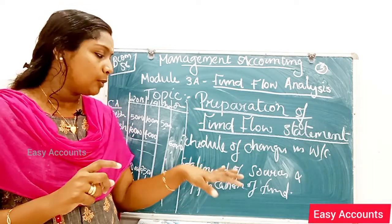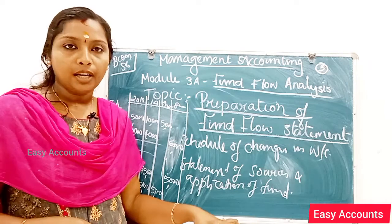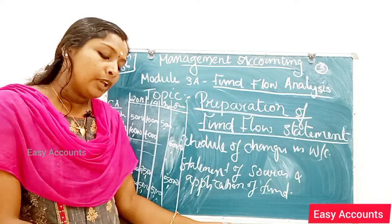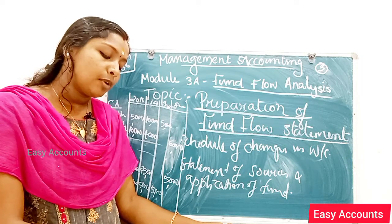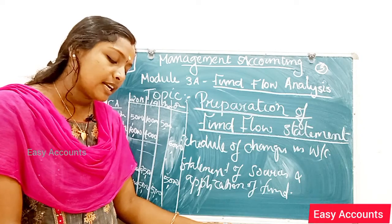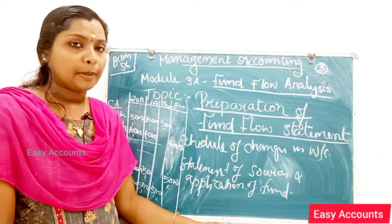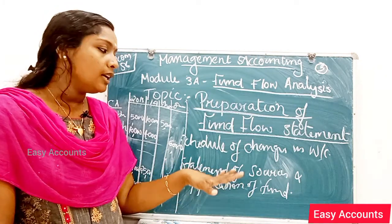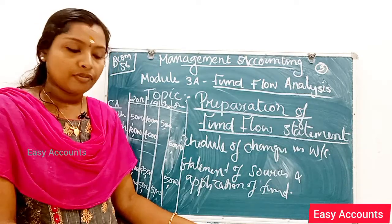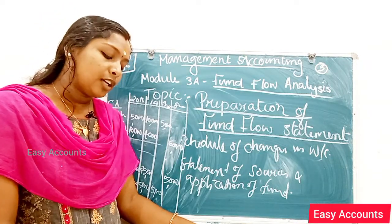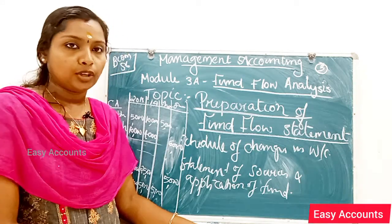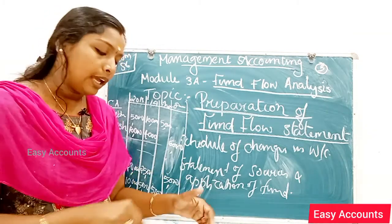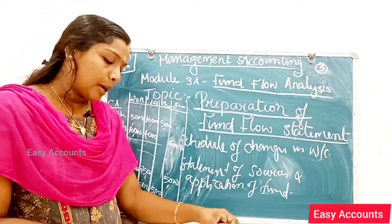The Statement of Sources and Application of Funds is now prepared. The preparation of the fund flow statement involves ascertainment of increase or decrease in various items: fixed assets, long-term liabilities, and share capital. While preparing the fund flow statement, current assets and current liabilities are not included here — those go to the schedule of changes in working capital.